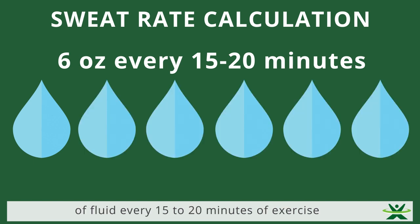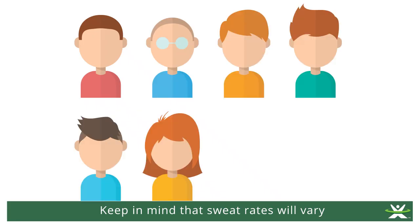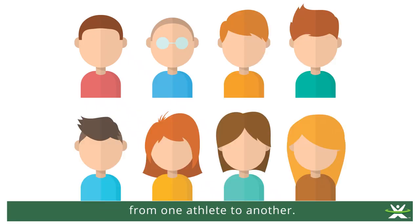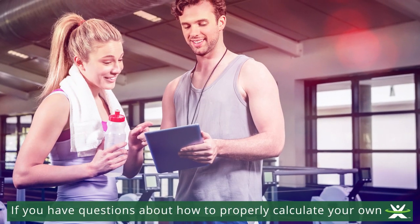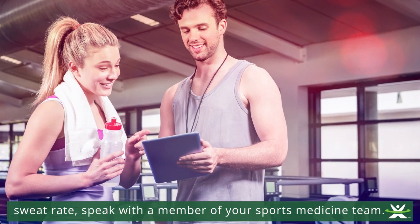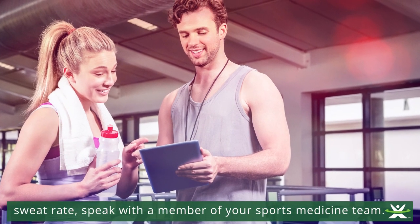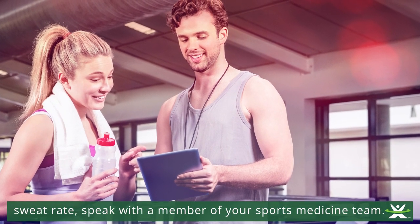In this scenario, the athlete should aim for six gulps of fluid every 15 to 20 minutes of exercise for optimal performance and hydration status. Keep in mind that sweat rates will vary from one athlete to another. If you have questions about how to properly calculate your own sweat rate, speak with a member of your sports medicine team.